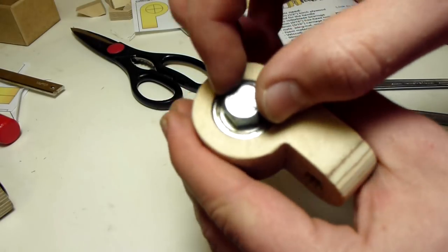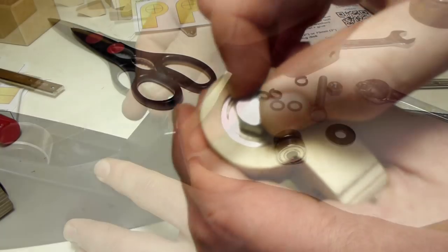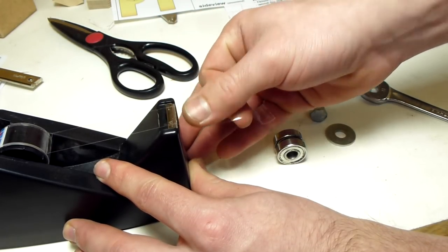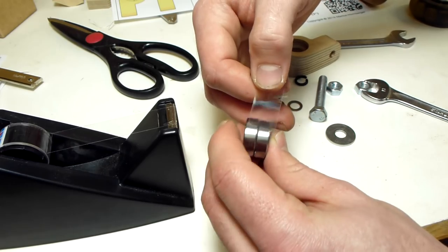Now maybe the hole for the bearings is slightly too big and the bearing can wiggle around a little bit. And what you can do is to add a layer of tape around the bearings and that should make them fit snugly.